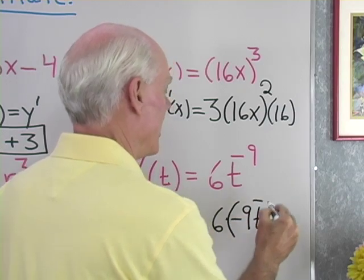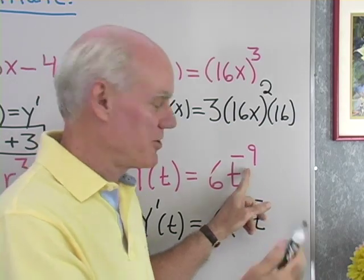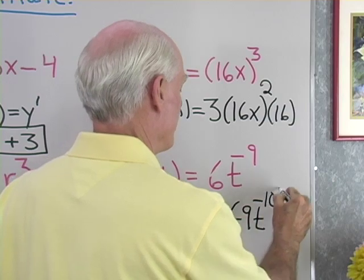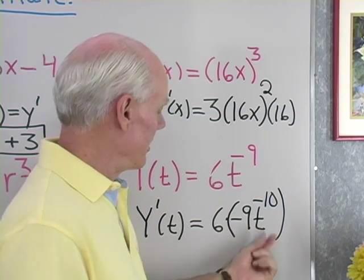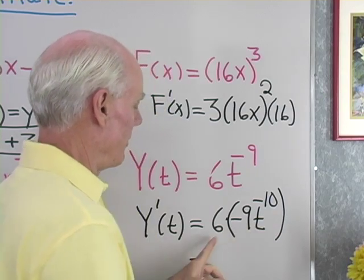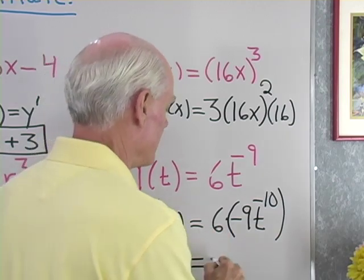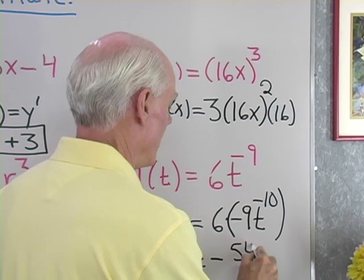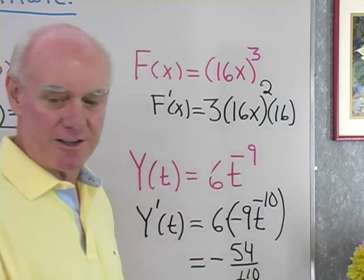t to the negative... Okay, I have to subtract one from that exponent. Negative 9 minus 1, negative 10. So here I have 6 times negative 9, t to the negative 10. Let's just simplify that one. 6 times 9, 54. Positive times negative, negative, so negative 54. t to the negative 10, so how about 54 over t to the positive 10th. Did that go off there? Yep. And so there you have negative 54 over t to the positive 10th.